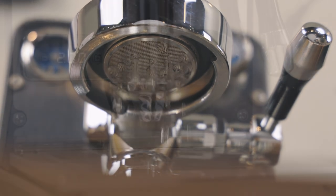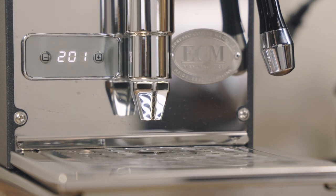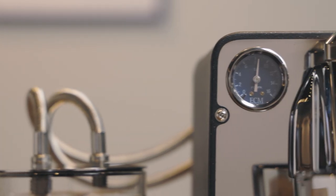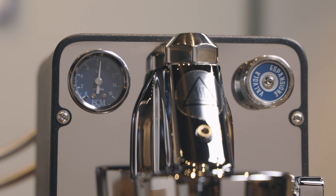The machine is ready for operation once the PID displays 93 degrees Celsius or 201 degrees Fahrenheit, which takes about 10 minutes. It's normal for the indicator of the pump pressure gauge to move slightly during the heating up phase.